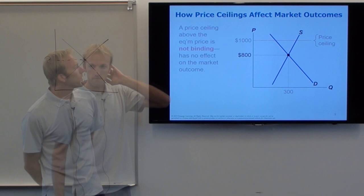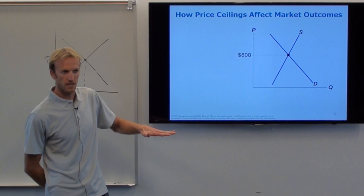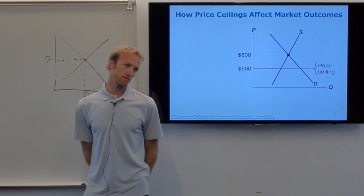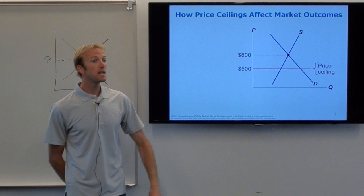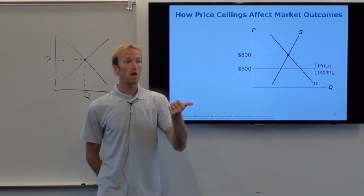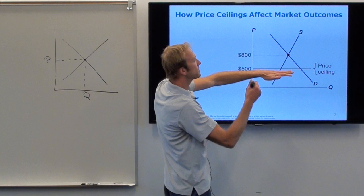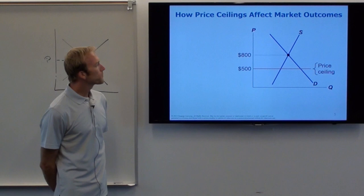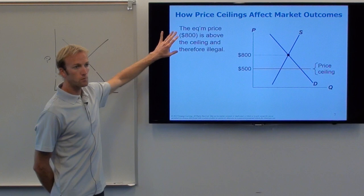Now let's look at a more realistic example. What do governments do when they institute price ceilings? They try to push the price down. Let's say the government imposes a price ceiling of $500. Now people are going to care, because the landlords want to rent their apartments for $800. The government says that's illegal — price ceiling means you can do everything under the ceiling, but nothing above it. So the equilibrium price of $800 is above the ceiling and is illegal. The landlords can no longer sell where they want to. We call this a binding constraint.